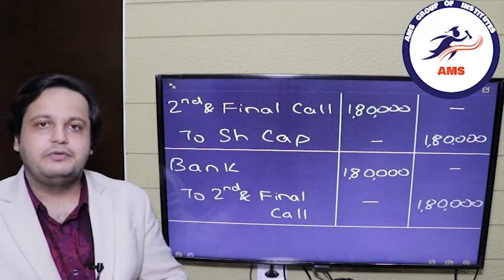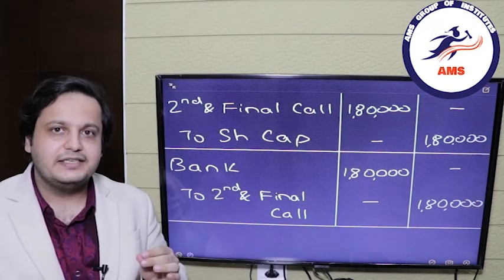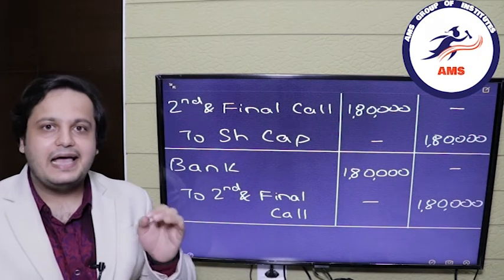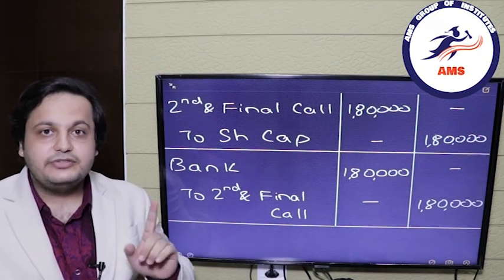This is how you account for share forfeiture using the fourth method — that is, shares forfeited before the final call and the company not using the Call in Arrears account. If you found this video useful, please give it a thumbs up and share the link with fellow peers and students. If you want us to make a video on any other topic, please use the comment section below. We have also started online classes for commerce, science, and MBA subjects. You can contact us by emailing amsgroupofinstitutes@gmail.com. Happy learning!